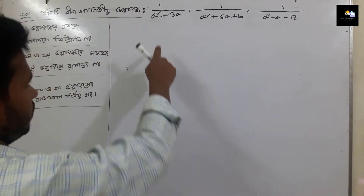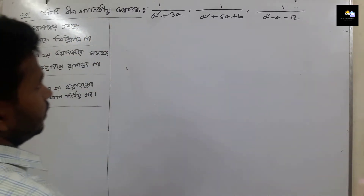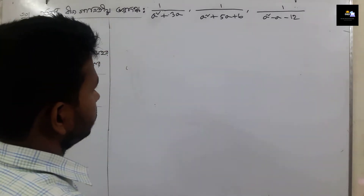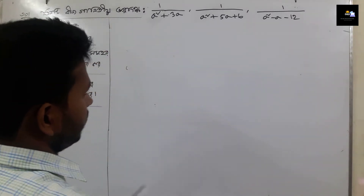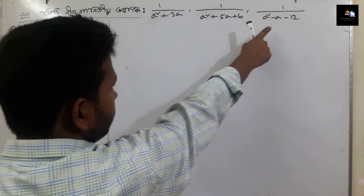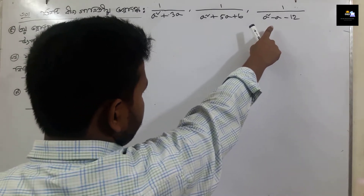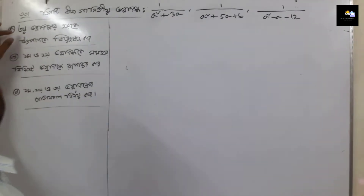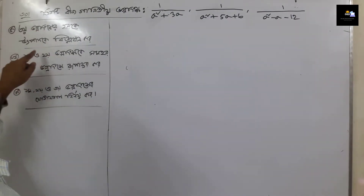The three problems are: 1 by a square plus 3, 1 by a square plus 5a plus 6, and 1 by a square minus a minus 12.